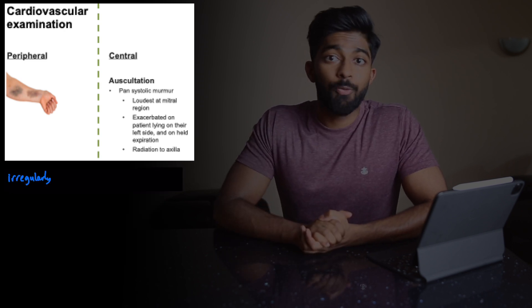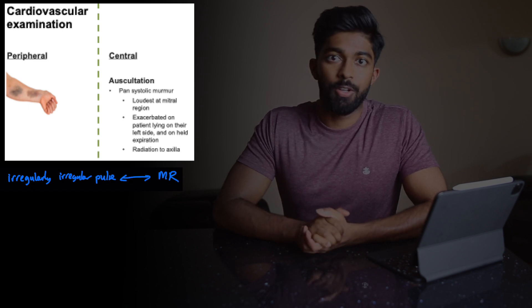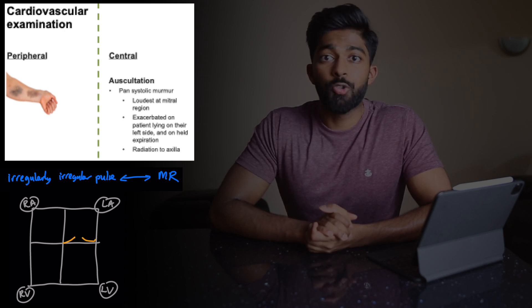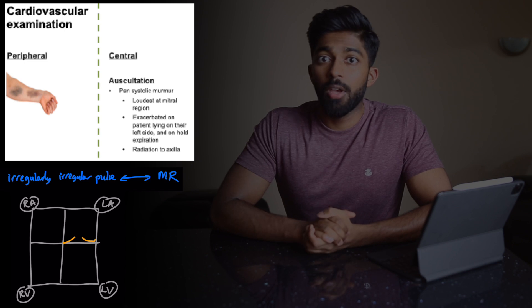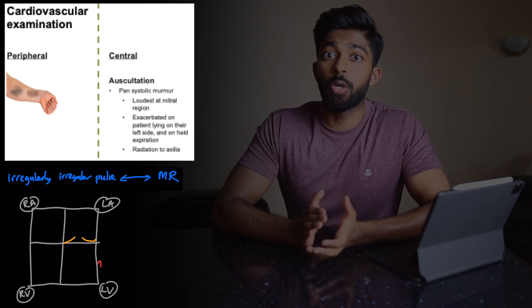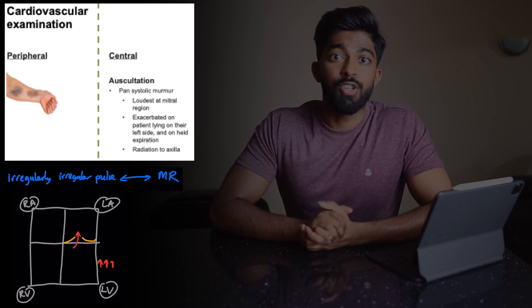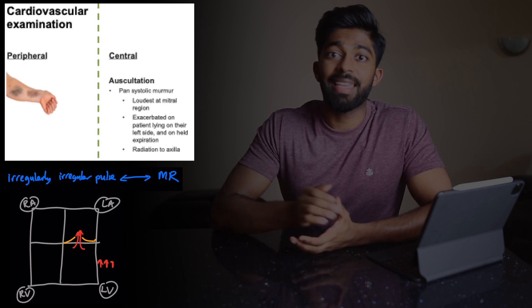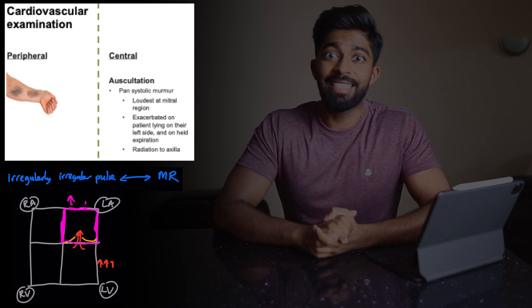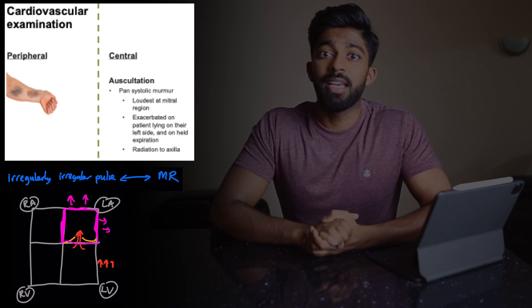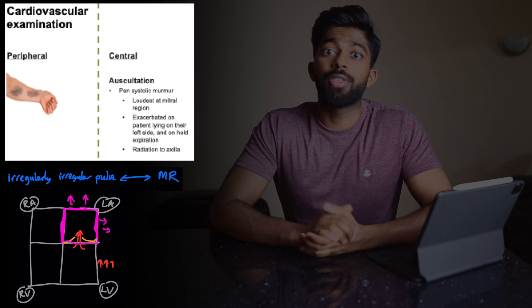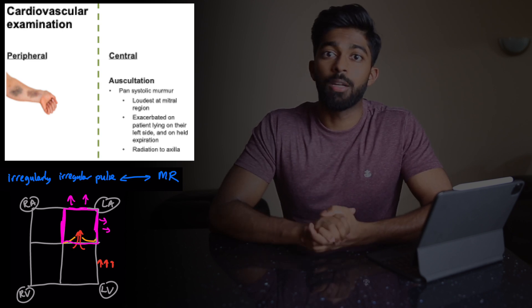Now thinking about how the irregularly irregular pulse is linked to the mitral regurgitation: going back to the basic diagram of the heart, the problem in mitral valve regurgitation is that the mitral valve doesn't close properly. When the left ventricle contracts — the strongest muscle in the heart — some of that blood is regurgitated back into the left atrium. After many years of this, the left atrium starts to remodel, becomes dilated, and doesn't contract as smoothly, affecting electrical conduction through the heart. So rather than a regular pulse you end up with atrial fibrillation — an irregularly irregular pulse.